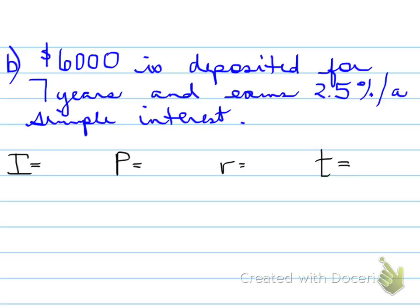you know it needs to be the IPRT formula. So here we go, IPRT, you got I, which you don't know, P, which is 6,000, R, which is 2.5%, so 0.025, and T is 7, 7 years.